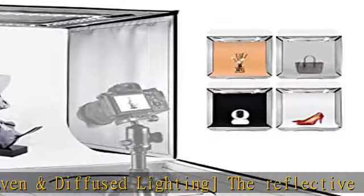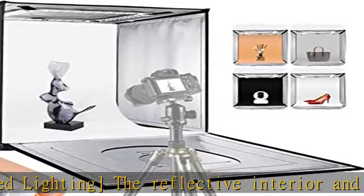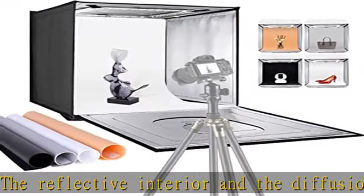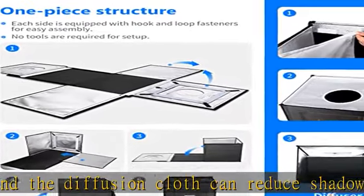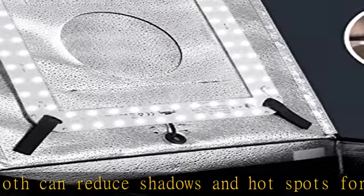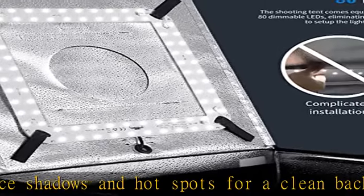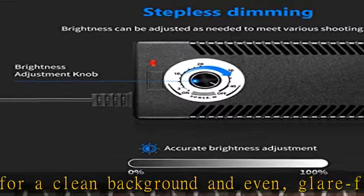The foldable design lets you fold it down and carry it wherever you go. Package contents: NEEWER 20x20x20 photo light box, diffusion cloth, four backdrops, power adapter, and user manual. Check the description to get this product today at the best price.